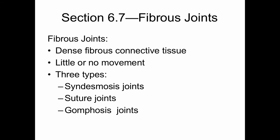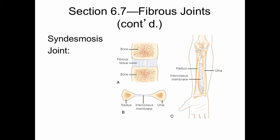Fibrous joints are dense fibrous connective tissue with little or no movement. There are three types: syndesmosis joints, suture joints, and gomphosis joints. The interosseous membrane between the radius and the ulna is a type of fibrous joint. Syndesmosis joints only permit a small amount of movement. Functionally, the interosseous membrane that unites the radius and the ulna is a synarthritic joint, but structurally it is a fibrous syndesmosis joint. Syndesmosis joints are characterized by dense fibrous connective tissue that unites the bones.